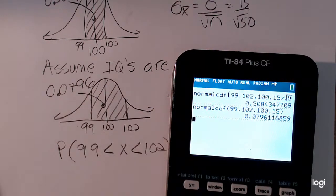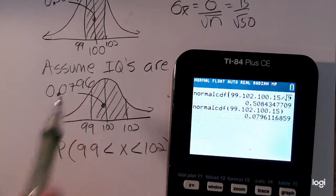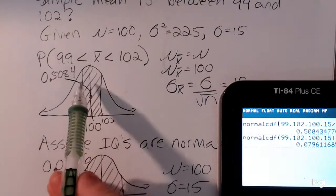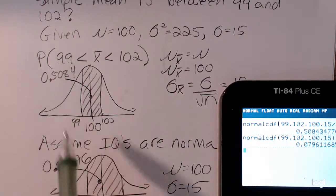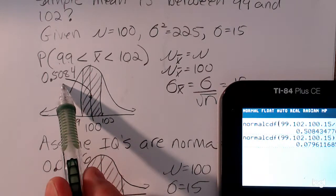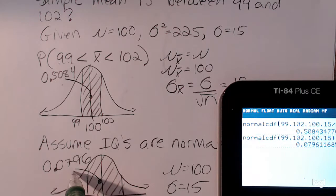Alright, so looking at this area or probability, .0796, and comparing it to the probability we get a sample mean between 99 and 102, clearly these aren't the same. You are more likely to get a sample mean between these two values for a group of 50 than an individual IQ between 99 and 102.